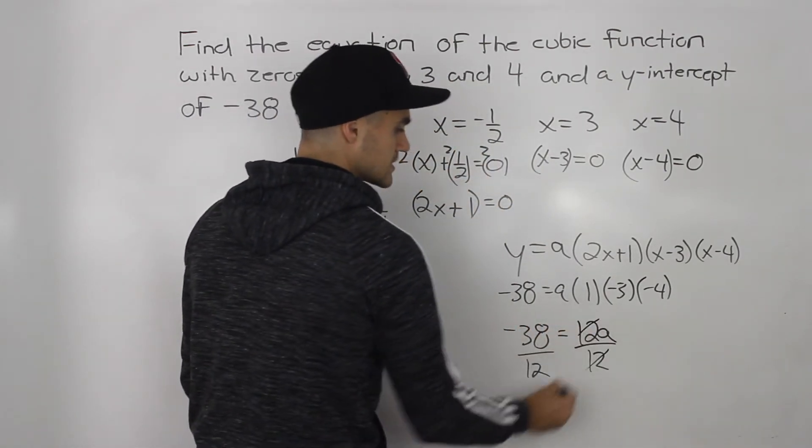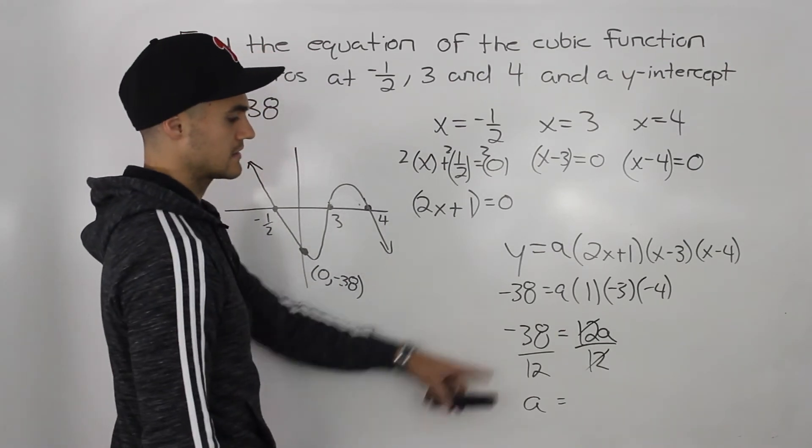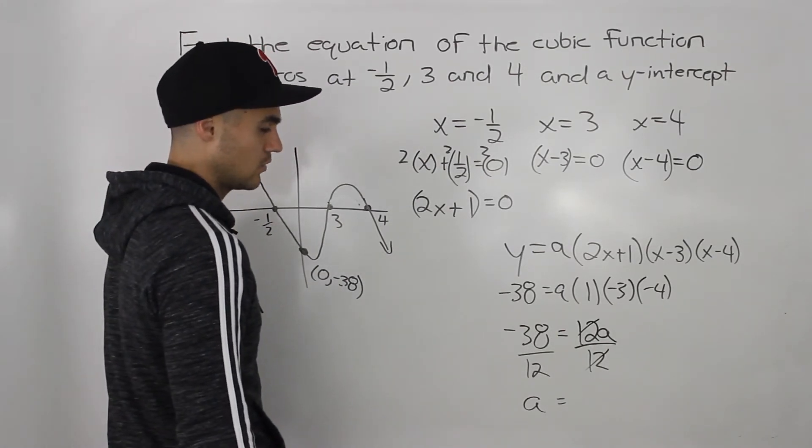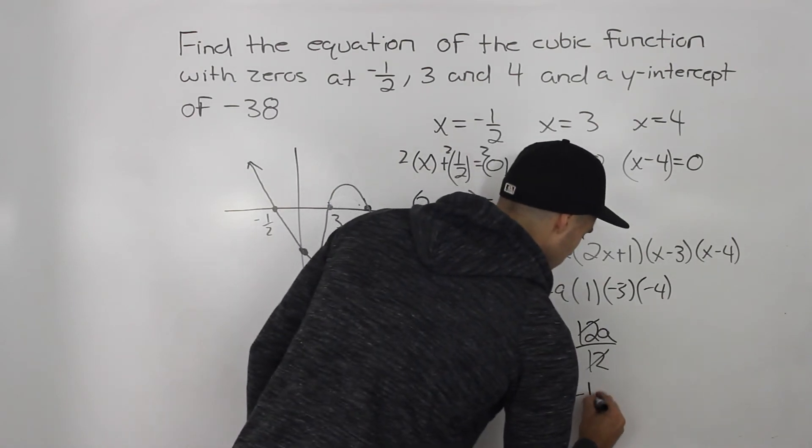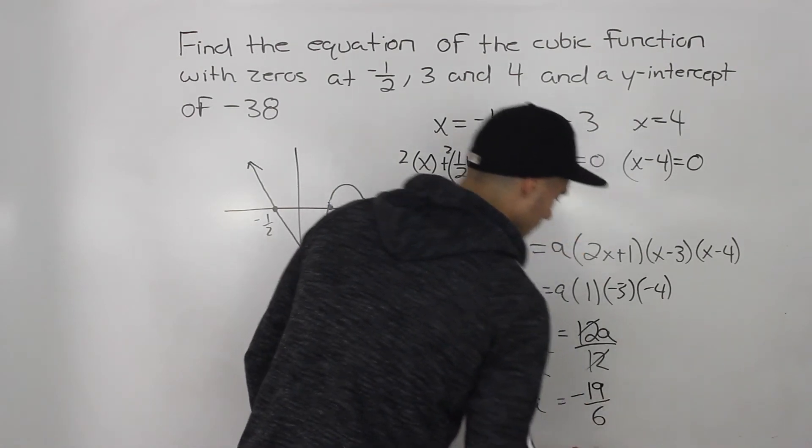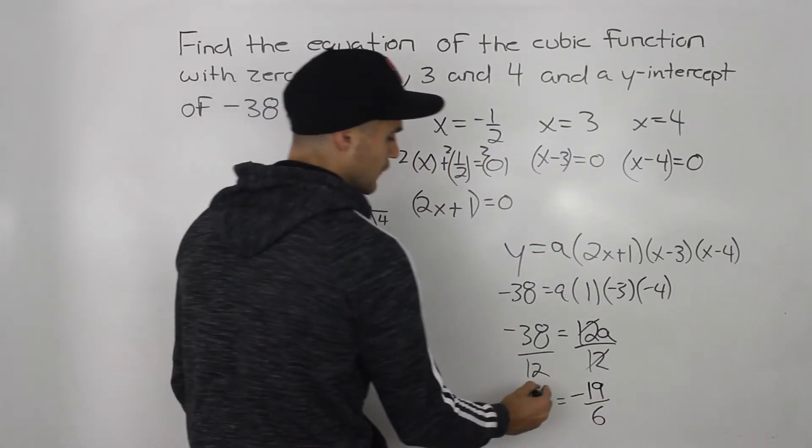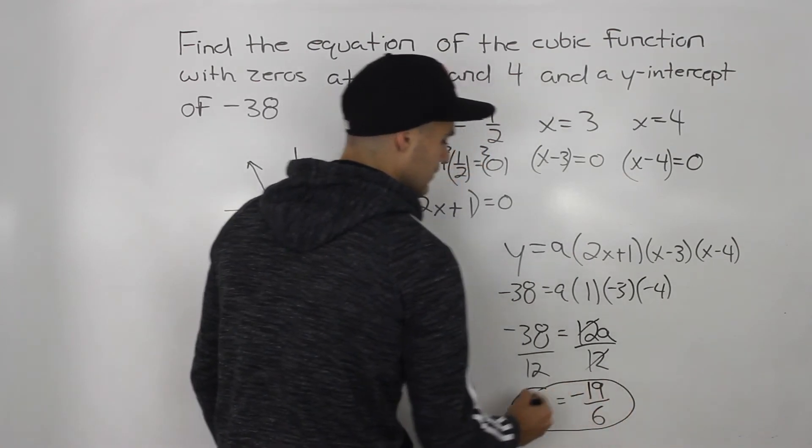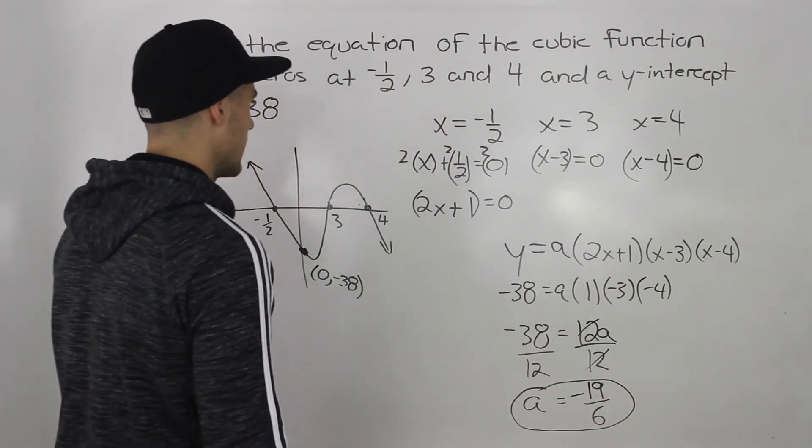we'll have a equals negative 38 over 12. Right? The 12 will cancel out here. And that can simplify to negative 19 over 6. And that won't simplify any further. So that there is our final a value.